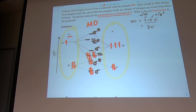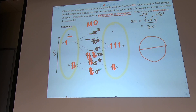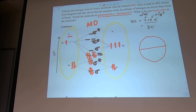Is this molecule paramagnetic or diamagnetic? Diamagnetic means the molecule just passes through a magnetic field with no interaction — all electrons are paired. Paramagnetic means unpaired electrons align like small magnets in a magnetic field. Looking at the MO diagram for BN, I see no unpaired electrons, so therefore it is diamagnetic — everything is paired up.